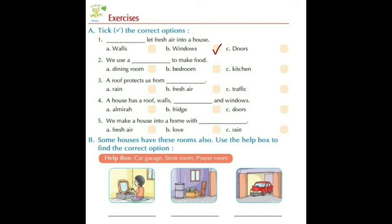Number two: We use a blank to make food. Option A: dining room, Option B: bedroom, Option C: kitchen. Do we cook our food in a bedroom? No! The correct answer is Option C — kitchen. We use a kitchen to make food.